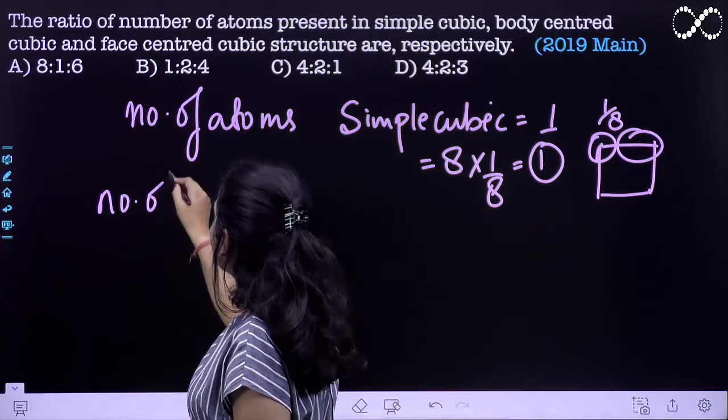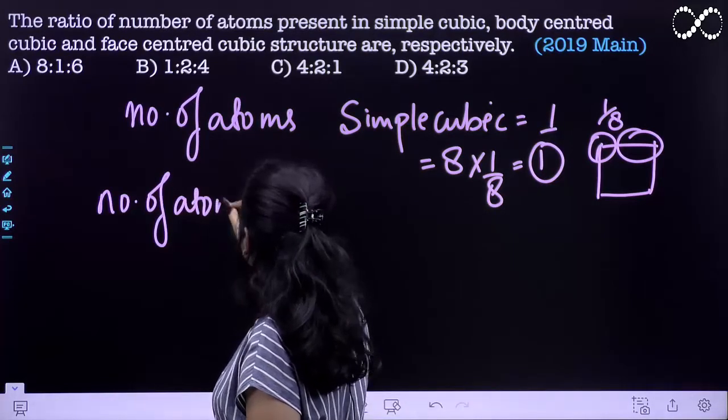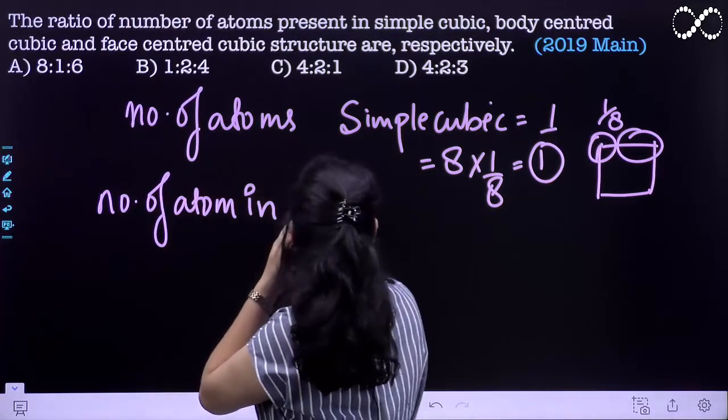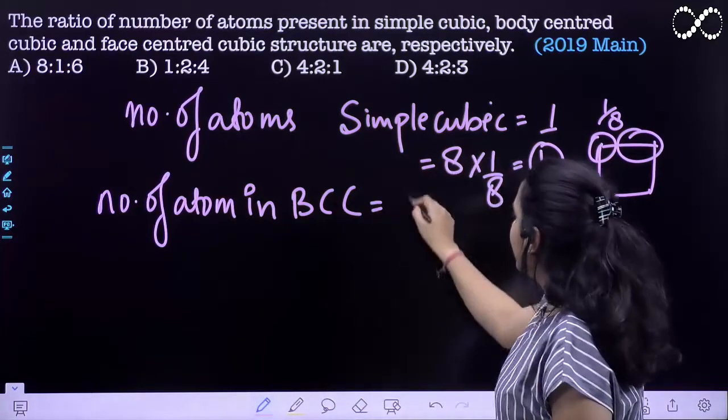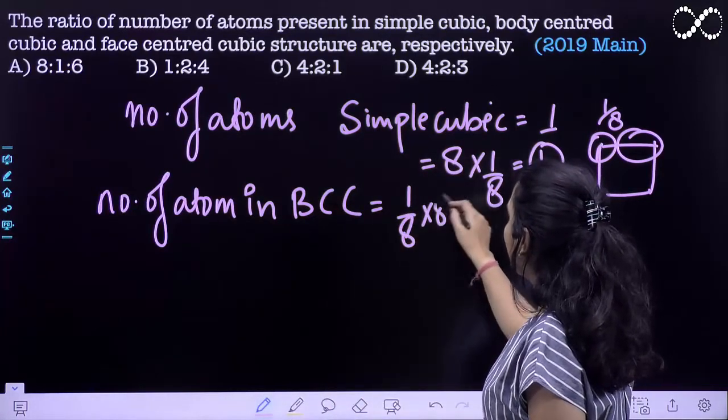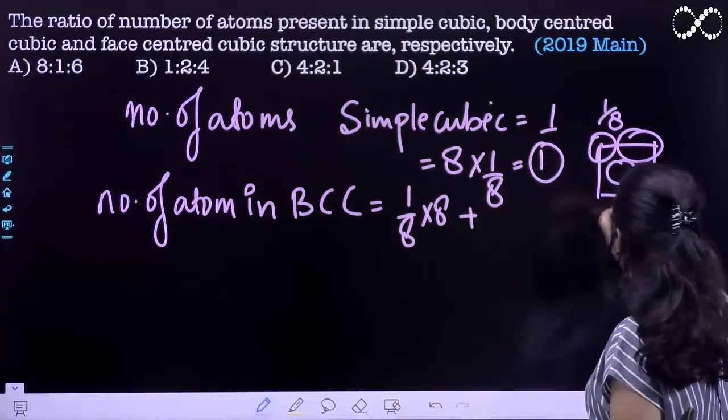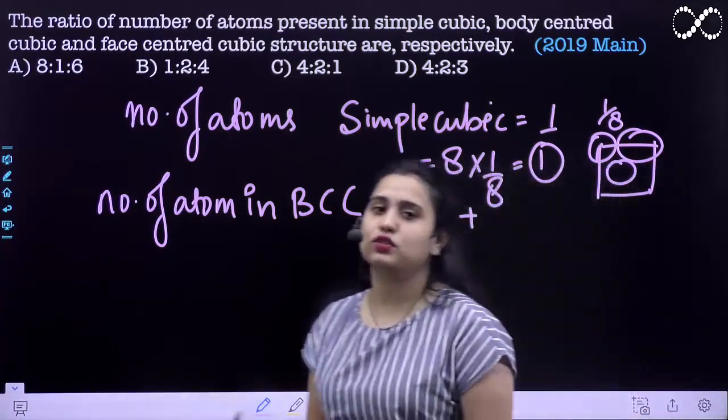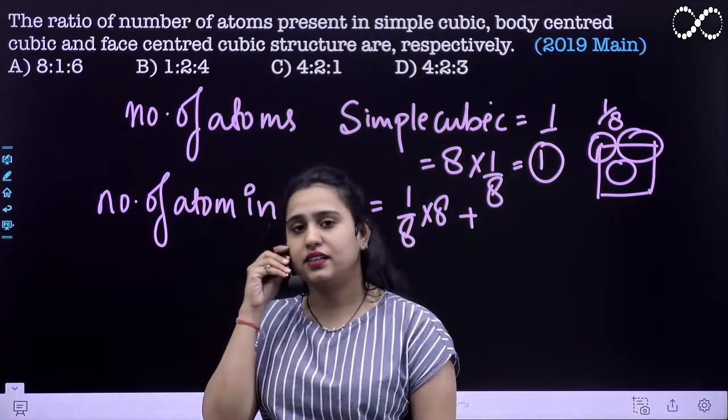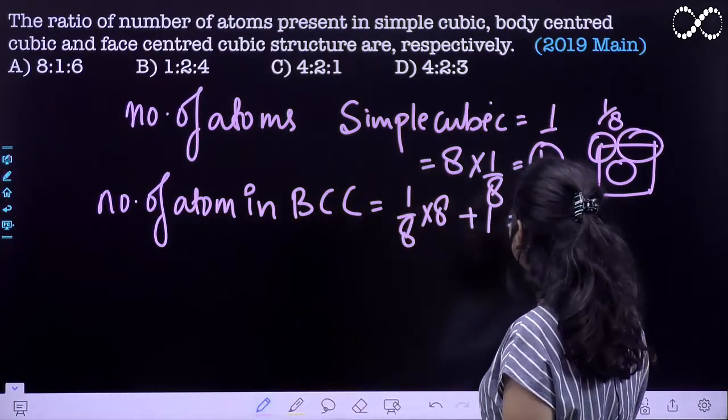Number of atoms in BCC is, this is your 8 over 8 edges. They have got 2 atoms in the body-centered cubic. So therefore, the number of atoms is 2.